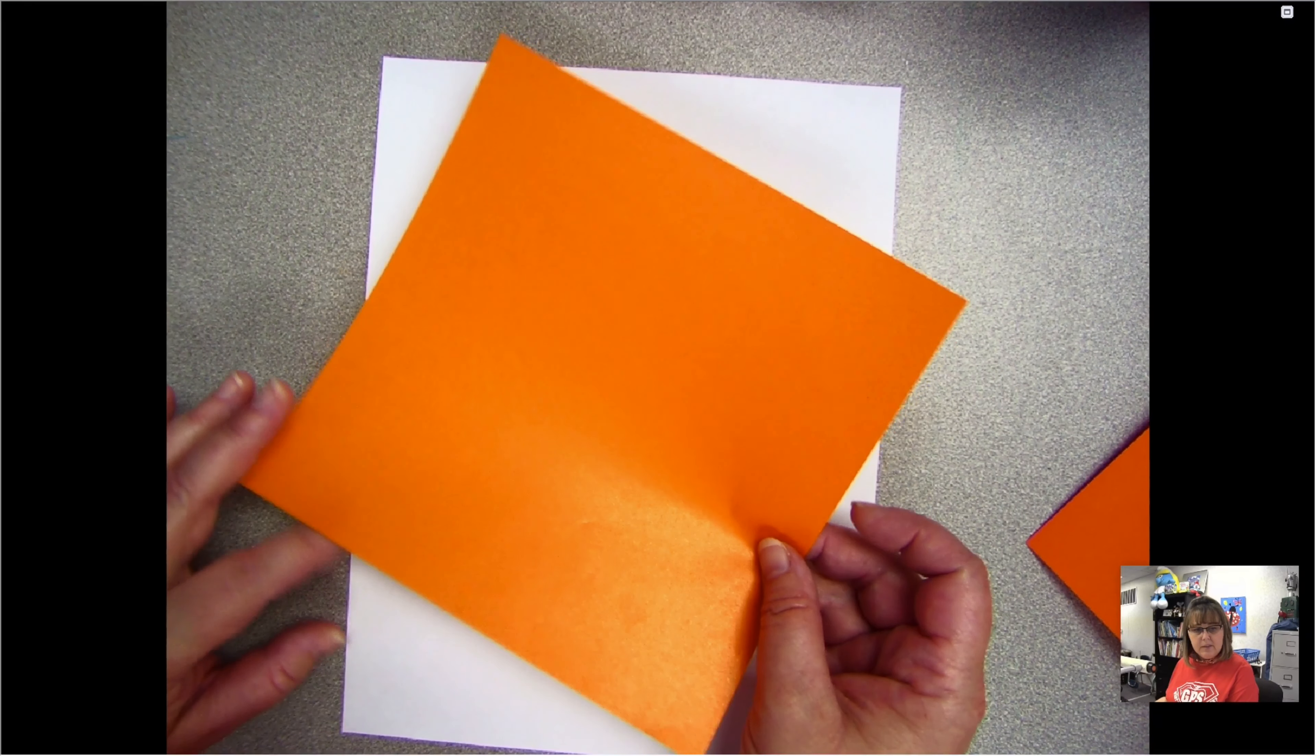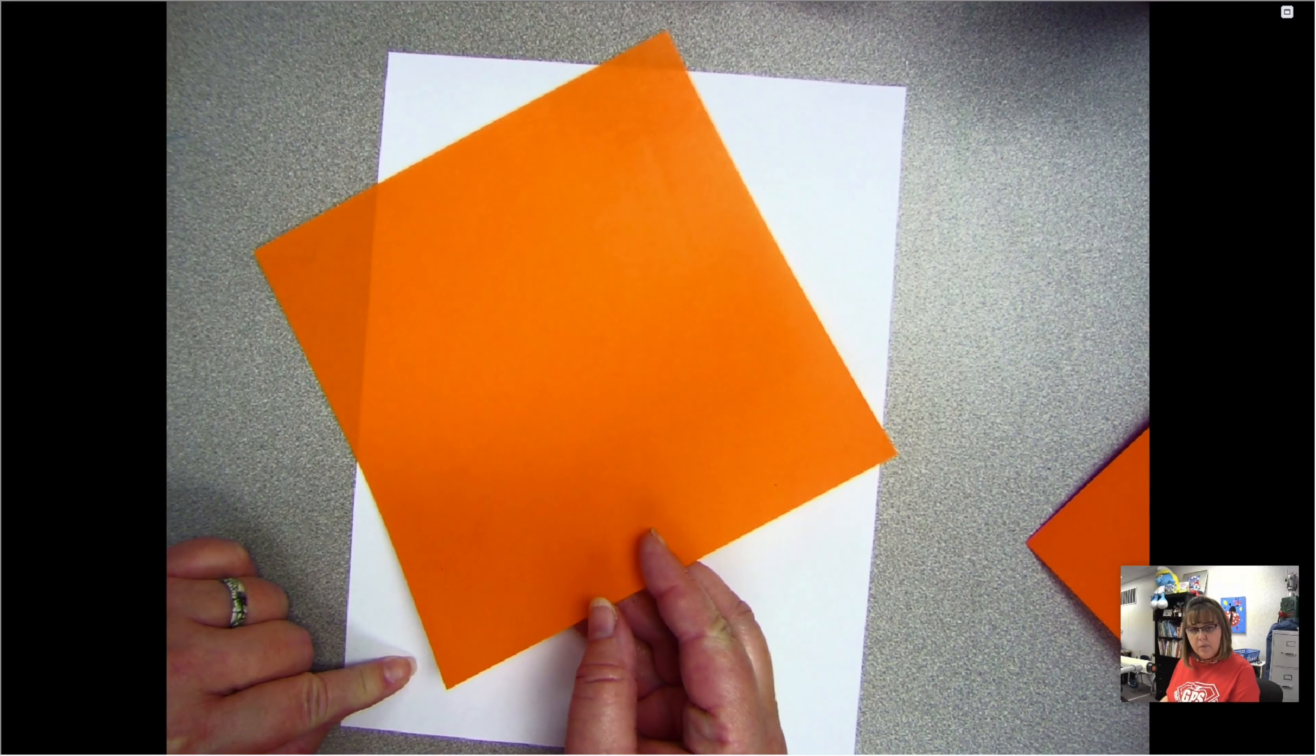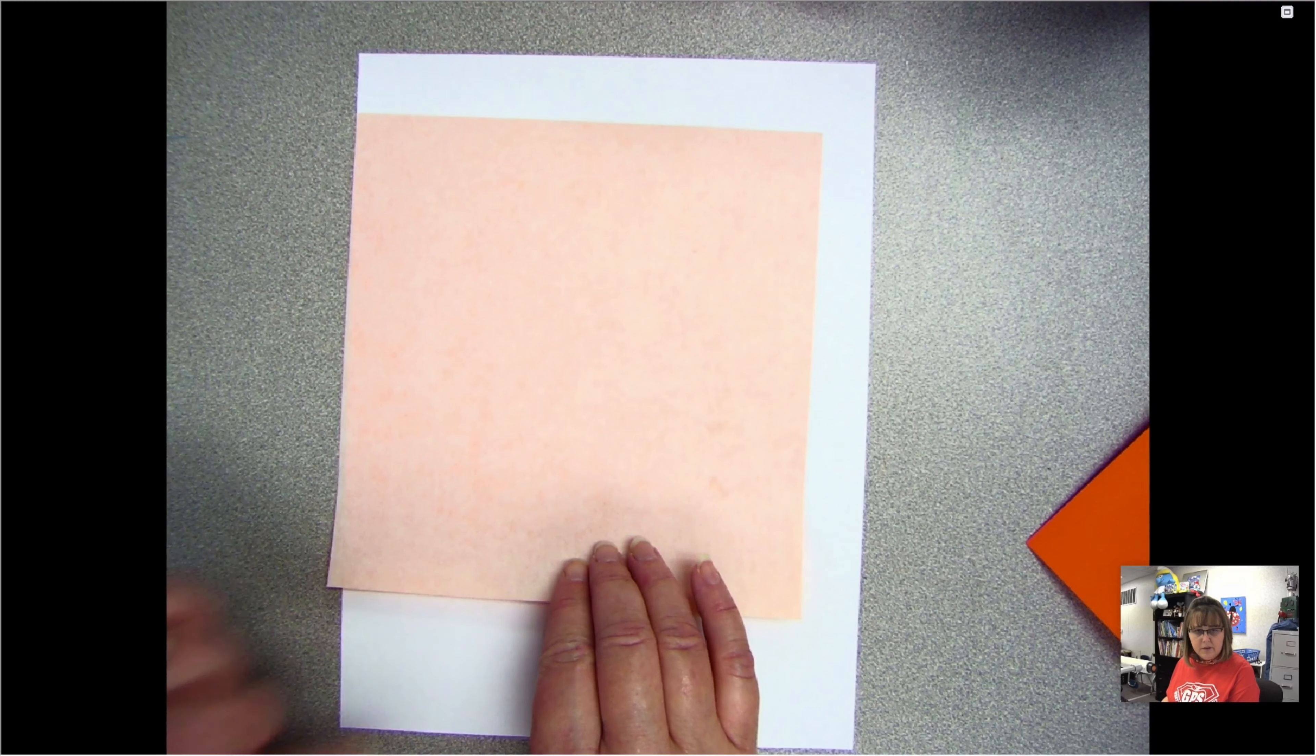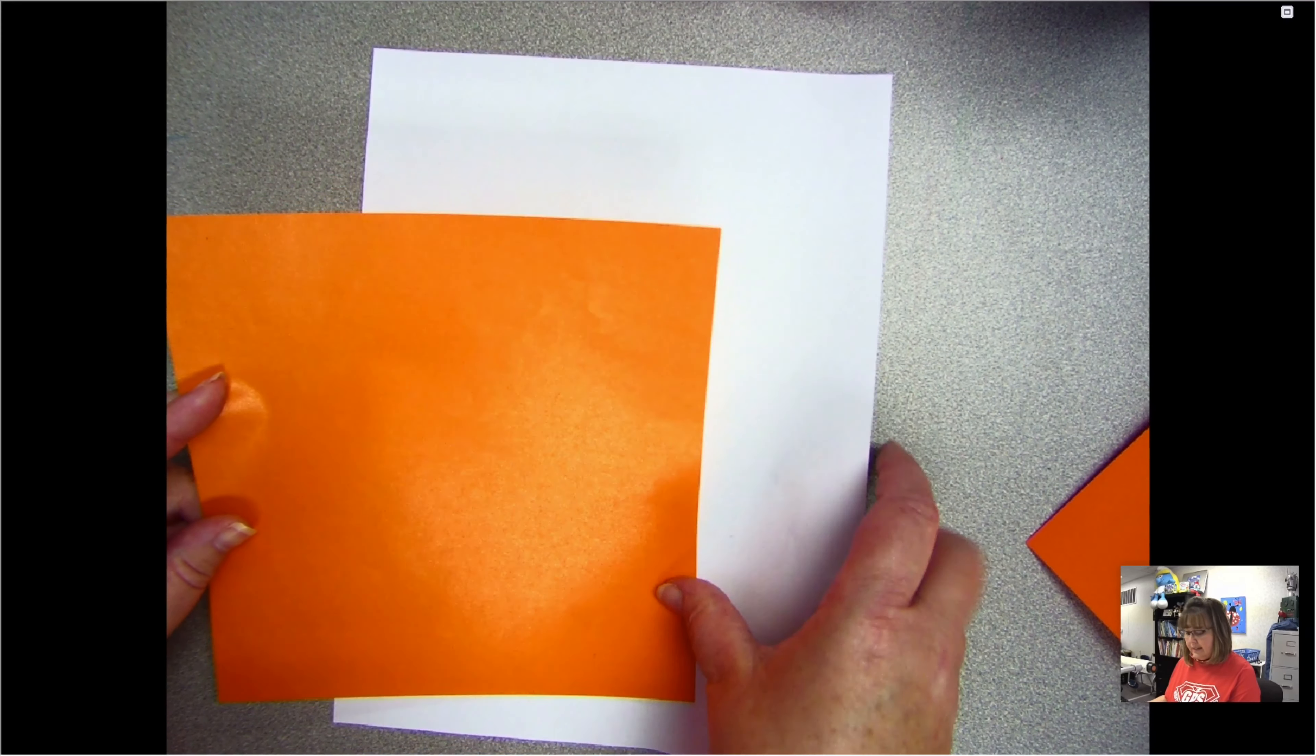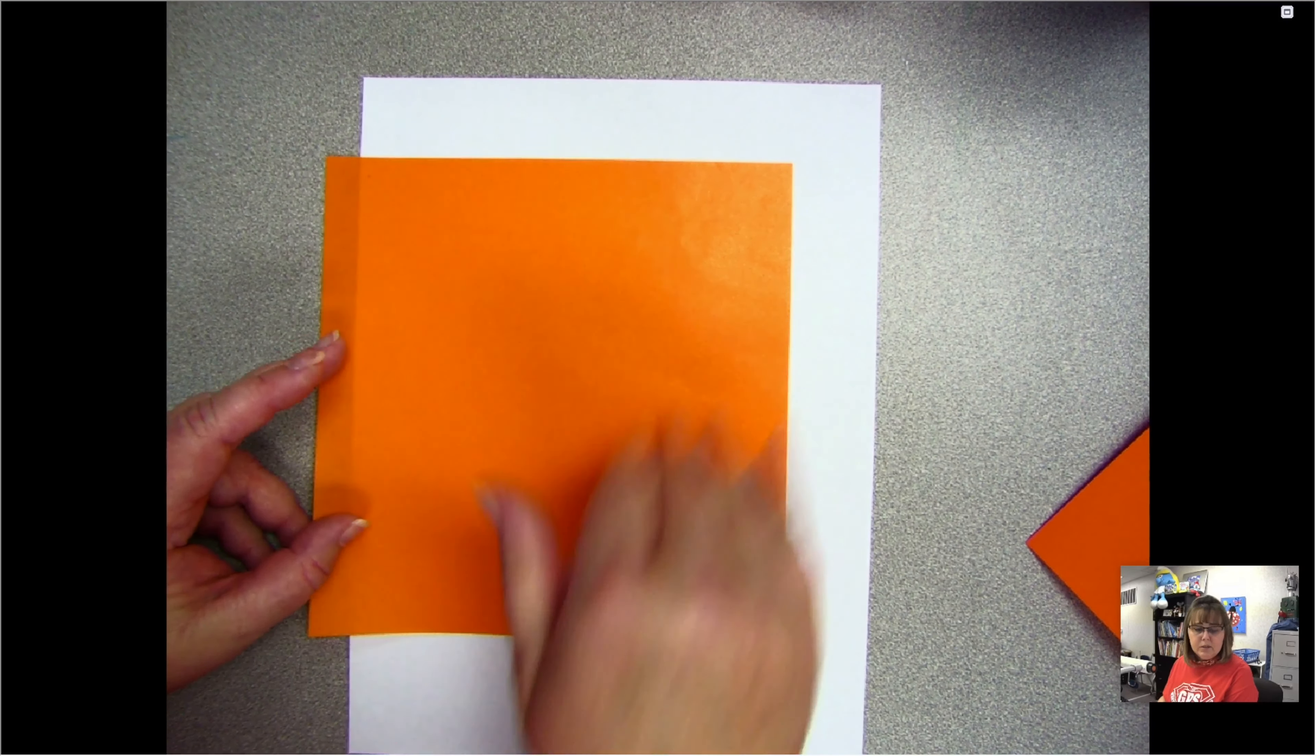I have origami paper, and origami paper is very thin. If you look you can see through it and see the paper line underneath. Origami paper typically, not always, but a lot of times has color on one side and white on the other, and that's what I'm going to use today because it's nice and thin.